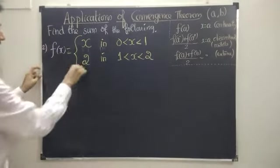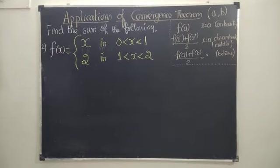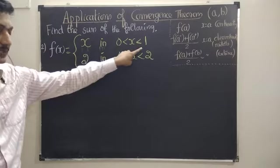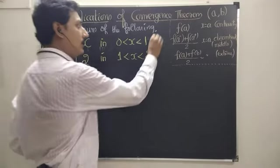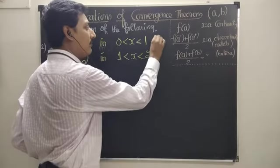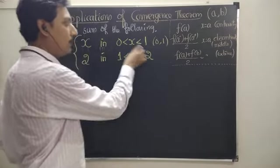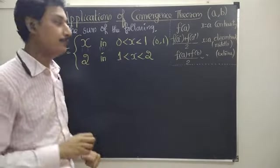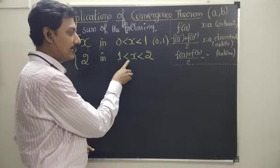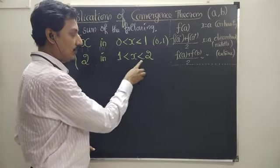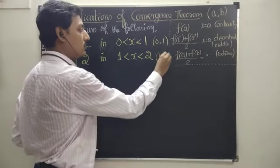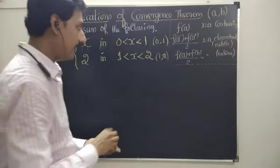So once I repeat: the given function is f of x equal to x in the interval 0 < x < 2. Less than means it is an open interval — these two points are not included, so they are points of discontinuity. Similarly, 1 < x < 2 is also an open interval. All points 0, 1, and 2 are not included. Let's see the diagram.